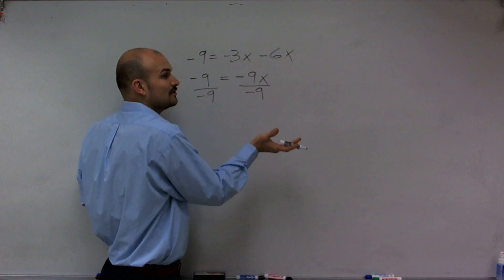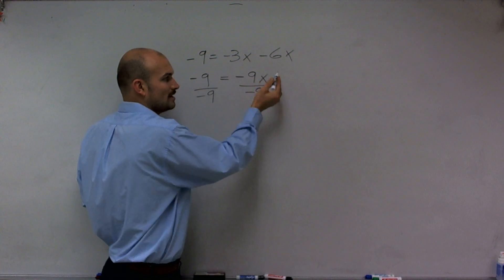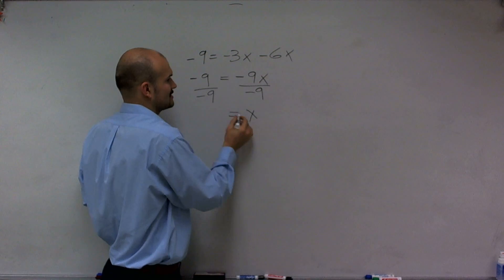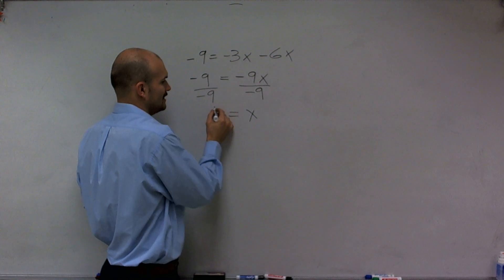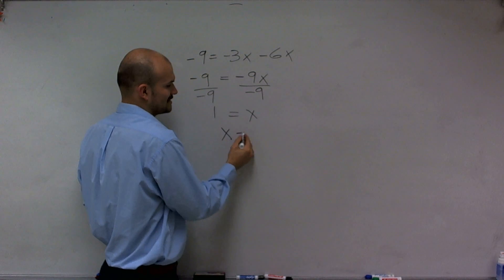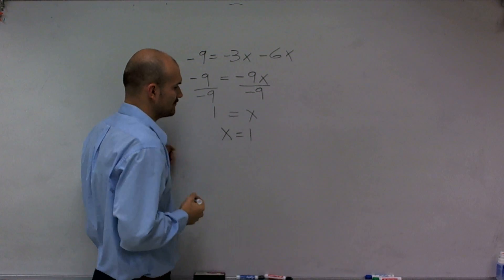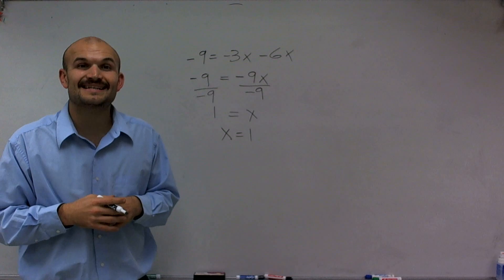Now -9 divided by -9 is going to divide into 1, and 1 times x is going to leave me with x. -9 divided by -9 is going to leave me with 1. Sometimes we like to rewrite it so our variable is in front. So therefore, we can say x = 1.